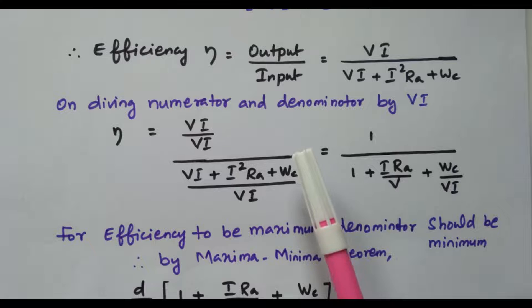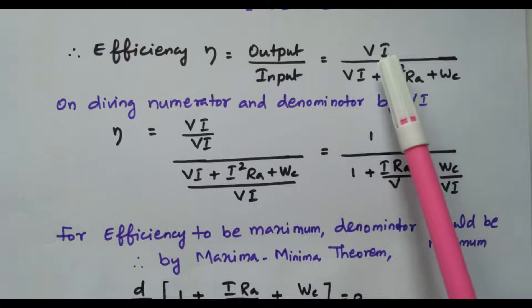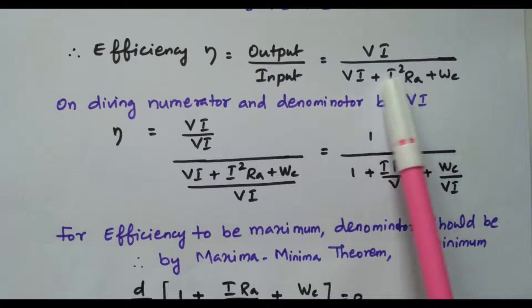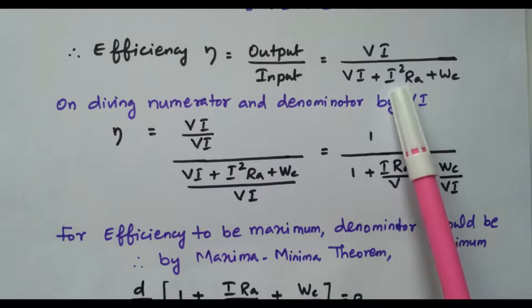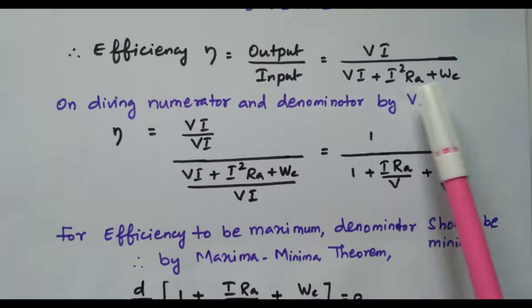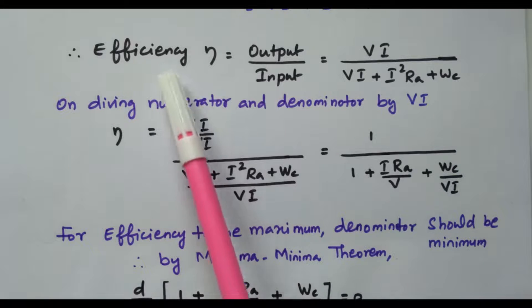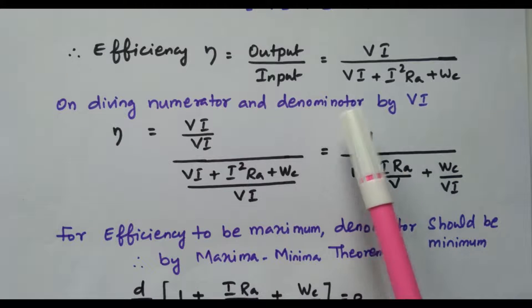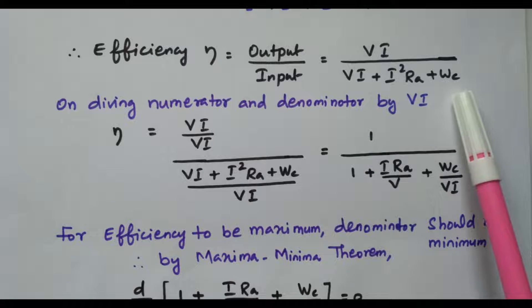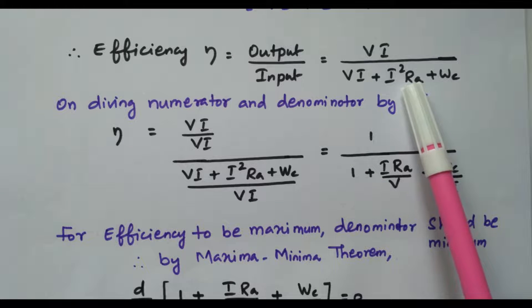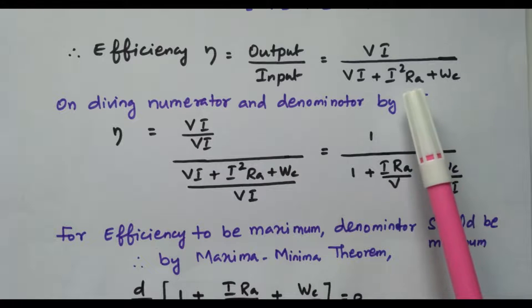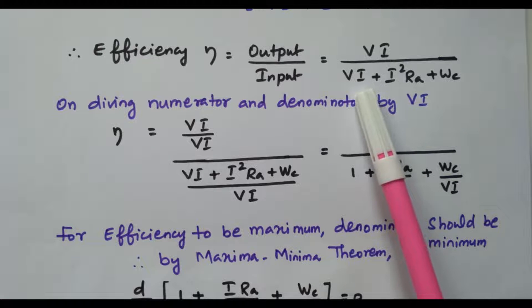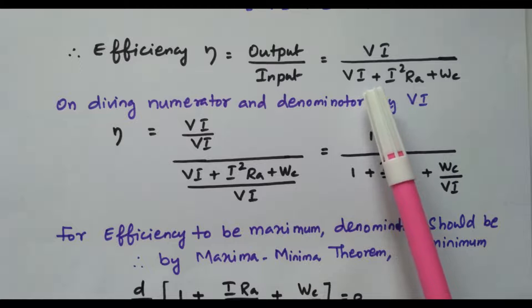We need to find the condition for maximum efficiency — for what condition will this efficiency be maximum? This efficiency is purely based on the current. When current increases, losses increase, and automatically efficiency decreases. So current is the important parameter to find the condition for maximum efficiency.